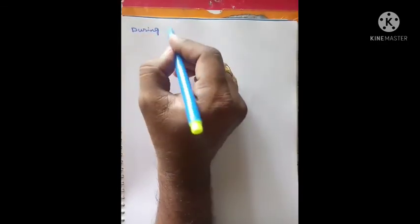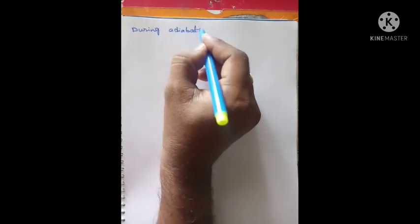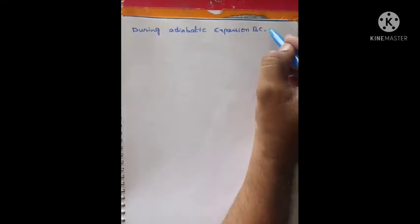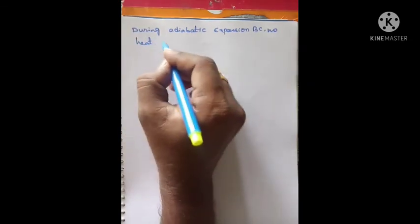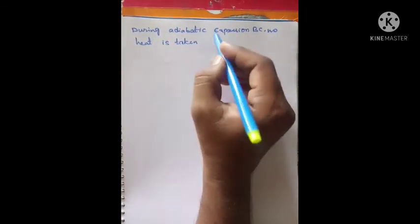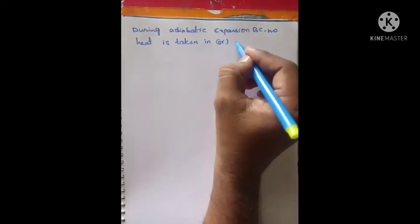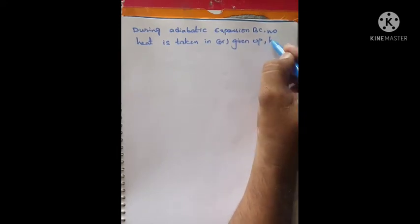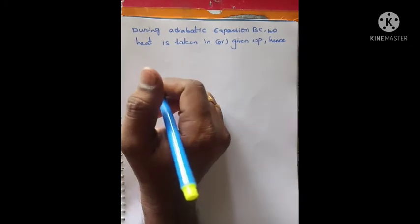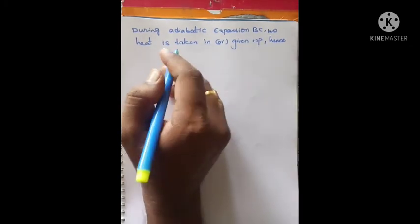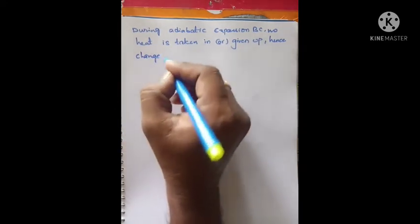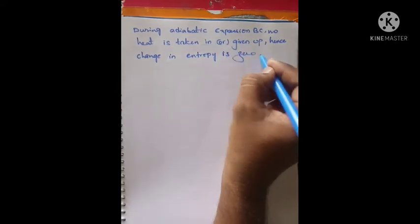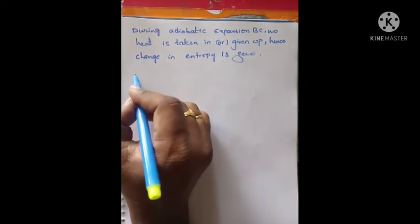During the adiabatic expansion (curve BC), no heat is taken in or given up. Hence, the change in entropy is zero.